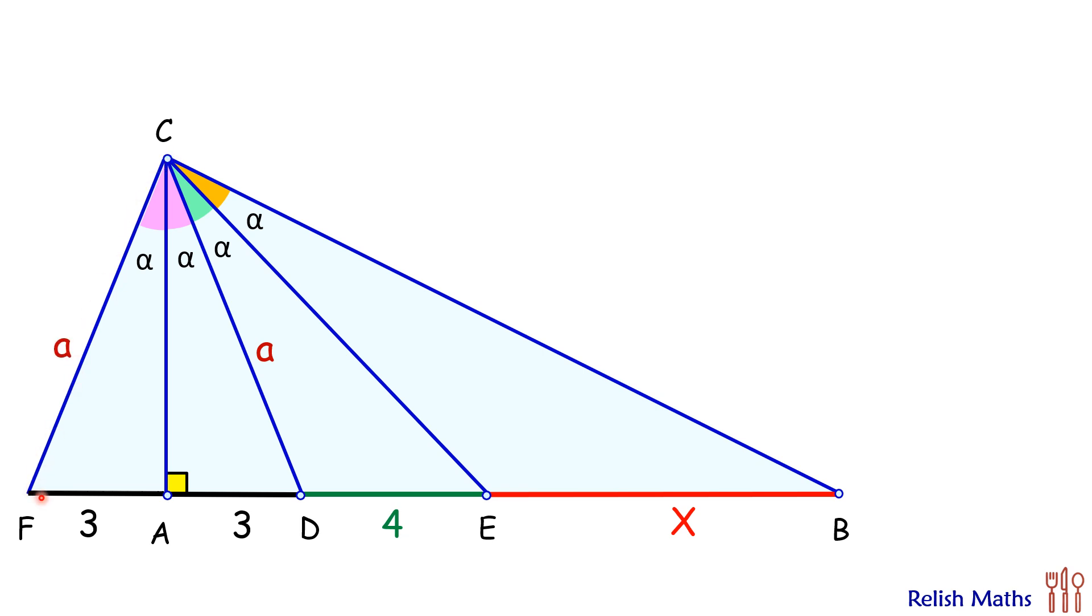Also, let's assume the length CB is b centimeters. Now if we look at the full triangle, that is triangle CFB, in this bigger triangle the length CD—now this is 2α and this is 2α—so CD is basically angular bisector.